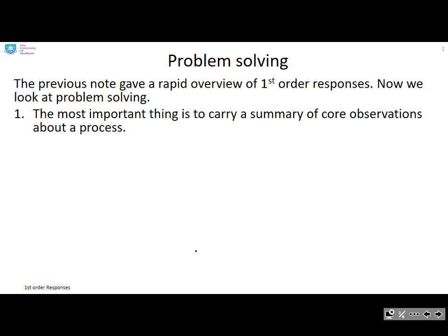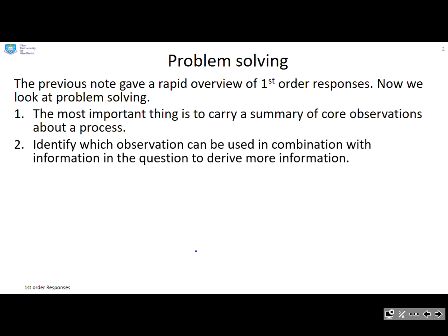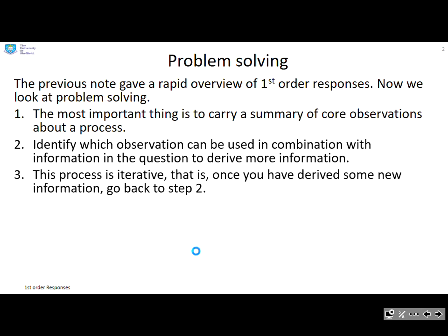The previous note gave a rapid overview of first order responses. Now we're looking at how we might solve problems. The most important thing is to carry a summary of core observations about the process. Then identify which observation can be used in combination with the information in the question and use that to derive more information. This process is iterative, so once you've derived new information you go back to step two.